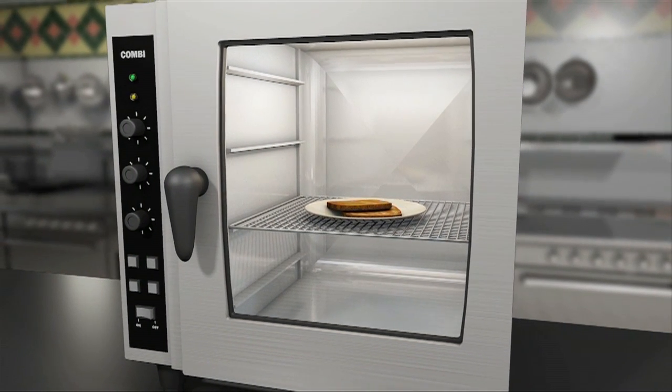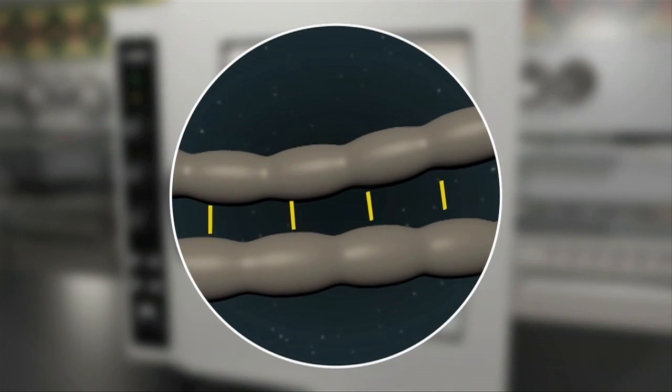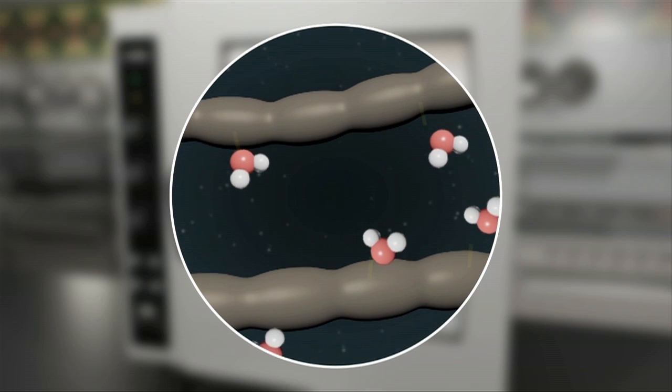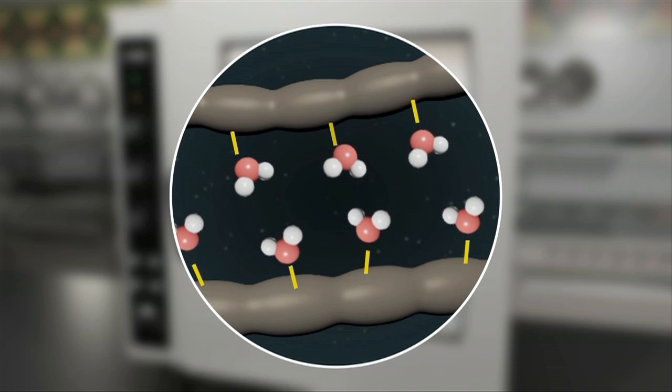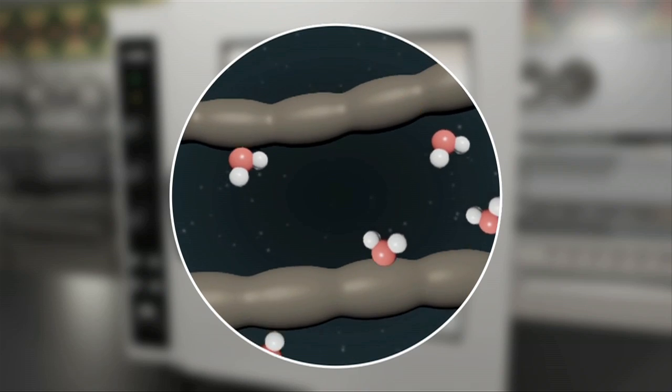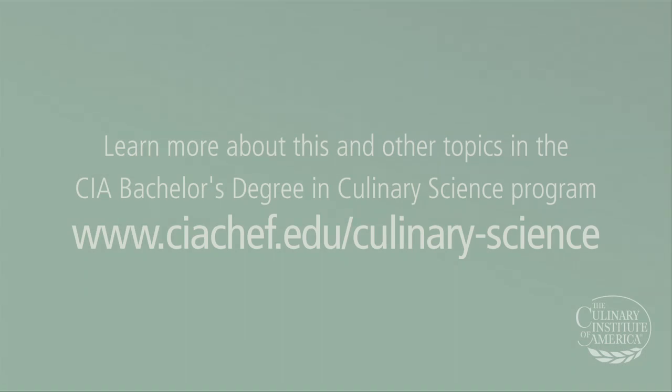Retrogradation can be reversed by reheating, which breaks the starch-starch hydrogen bonds and allows water molecules to reestablish bonds with the starch molecules. However, on cooling the starches will retrograde again. An understanding of starch and its behavior allows for the production of thickened sauces such as velouté, gel desserts such as pudding, or crispy treats like crackers.